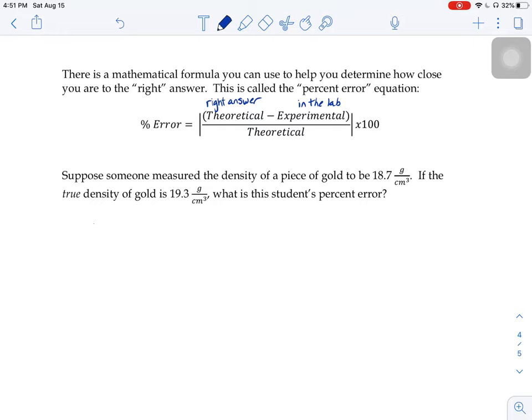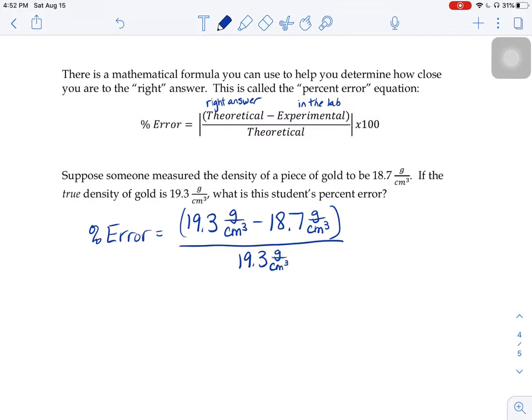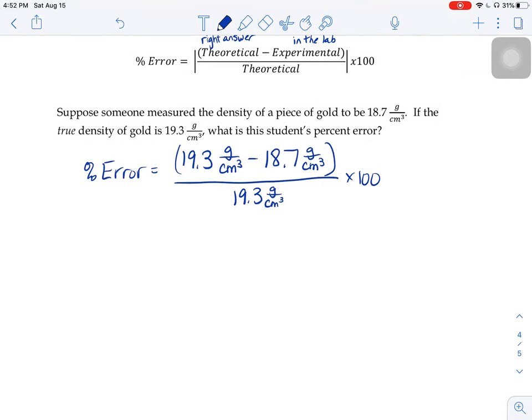So, for percent error, we're going to write theoretical, what should it be? What's the true answer? 19.3 grams per cubic centimeter is what it should be. But in the lab, when they measured it, they got it to be 18.7. So, if I simplify that a little bit, the 19.3 minus the 18.7 on top would turn into 0.6 grams per cubic centimeter over 19.3 grams per cubic centimeter.